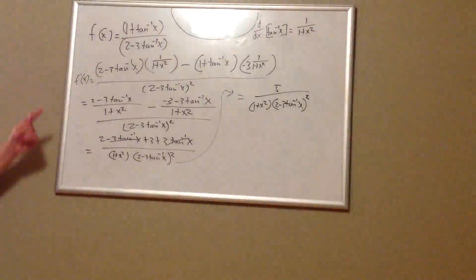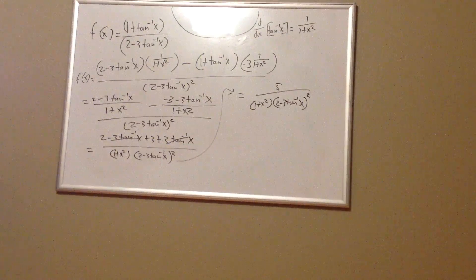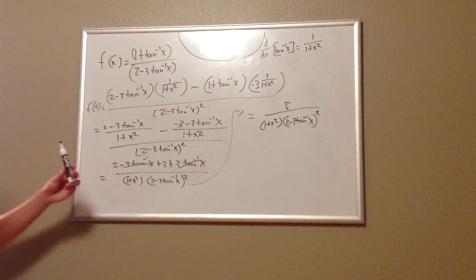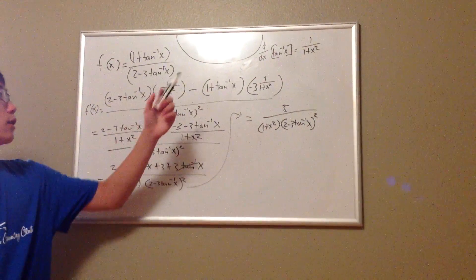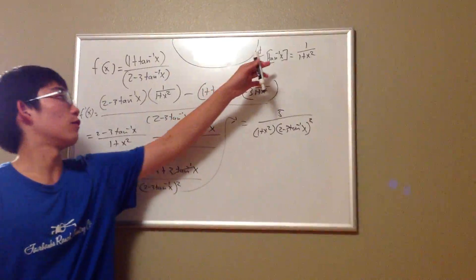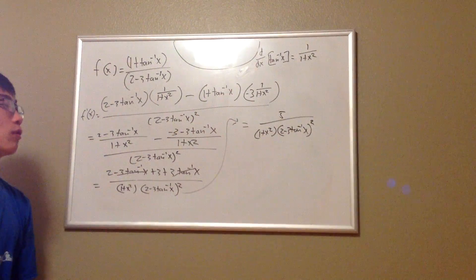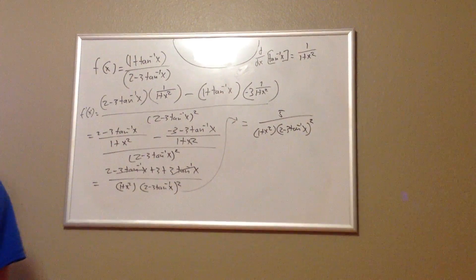The only difference between this problem and any other problem is the fact that you need to recognize that the derivative of arctangent x is 1 over 1 plus x squared.